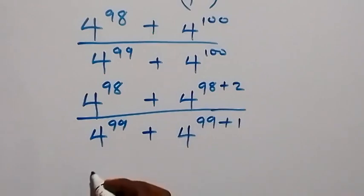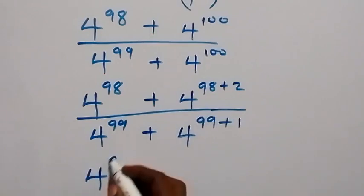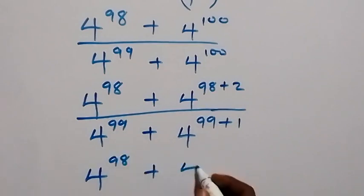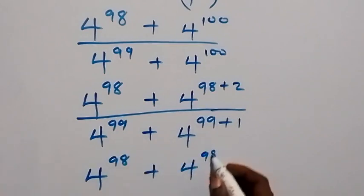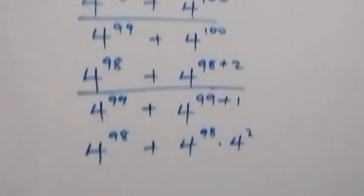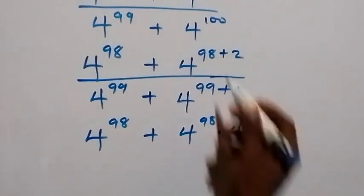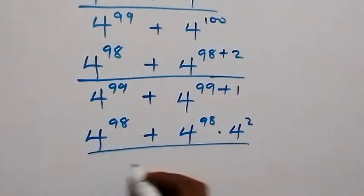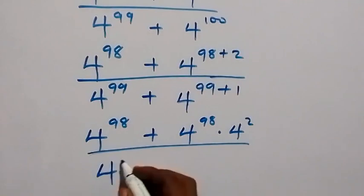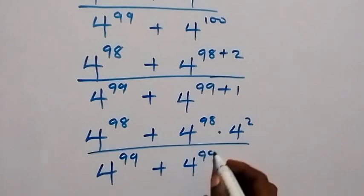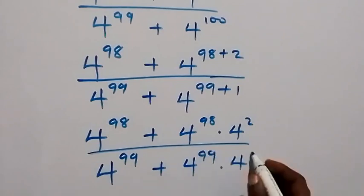When we apply the law of indices, we can separate it and have 4 raised to power 98 plus 4 raised to power 98 times 4 raised to power 2, divided by 4 raised to power 99 plus 4 raised to power 99 times 4 raised to power 1.